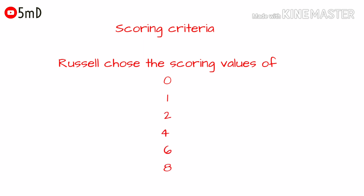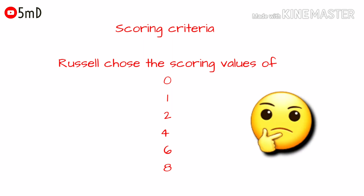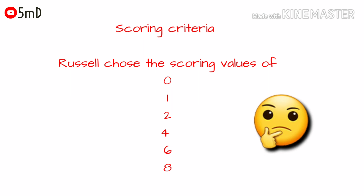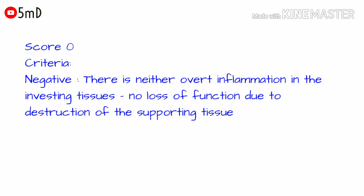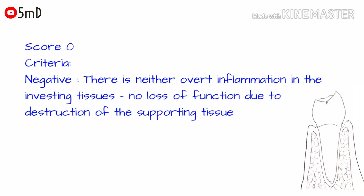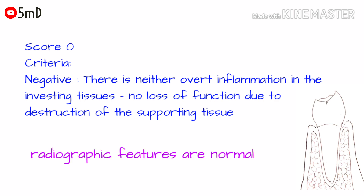What is the scoring criteria given by Russell? Russell chose the scoring values of 0, 1, 2, 4, 6, and 8. When there is neither inflammation nor loss of function due to destruction of the supporting tissues, you give a score of zero. The radiographic features in such conditions are normal.